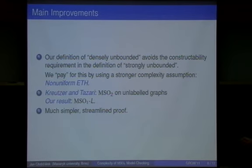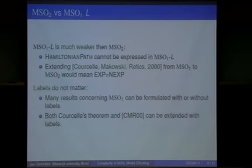So the main improvements: we define densely unbounded, which is much nicer in that we do not need the constructability requirement. We do not require graph GN to be easily constructable, but we pay for it by requiring non-uniform ETH. We need advice which depends only on the size of the input, not on the input itself. Second, we are able to move from MSO2 to MSO1 but with labels. And third, we have a much simpler and streamlined proof.